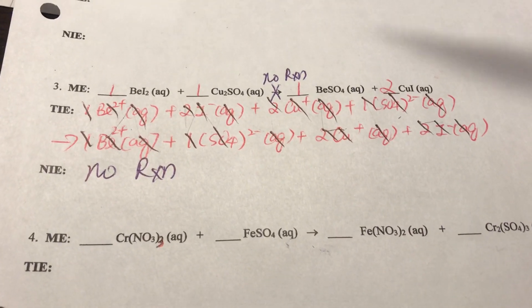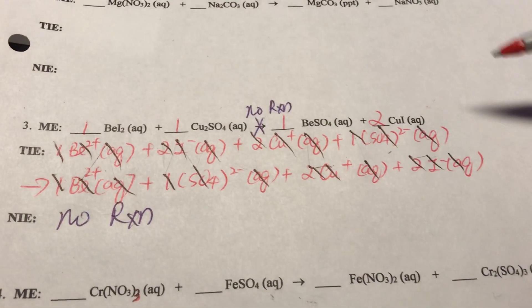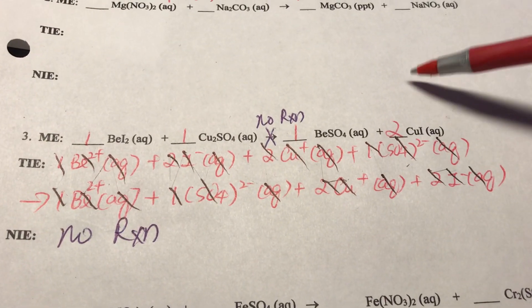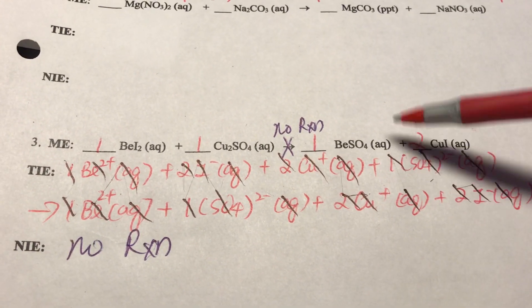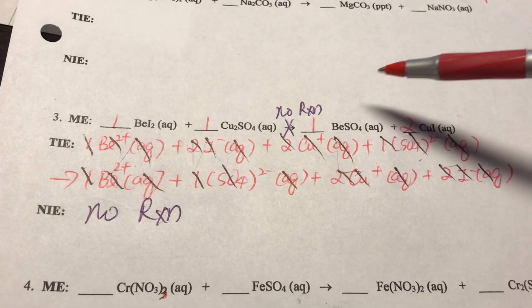So number three, we got to do the same thing. We balance the equation first: 1, 1, 1, 2. And here we have the hint that there's no reaction because the products are aqueous, so we keep that in mind - no reaction.